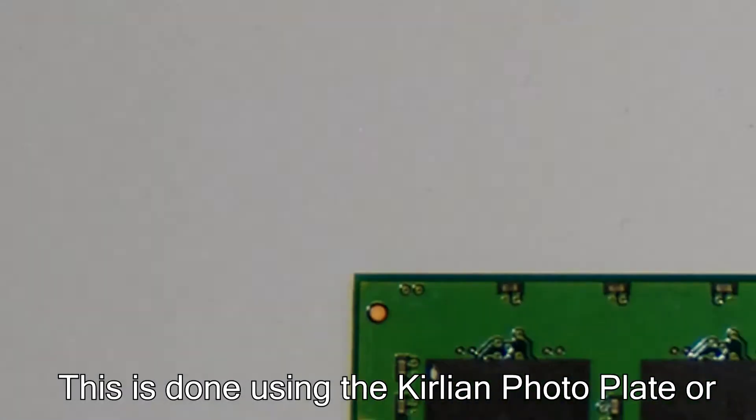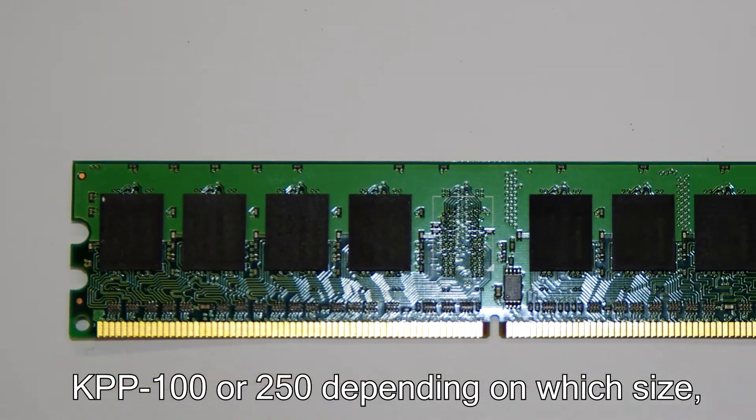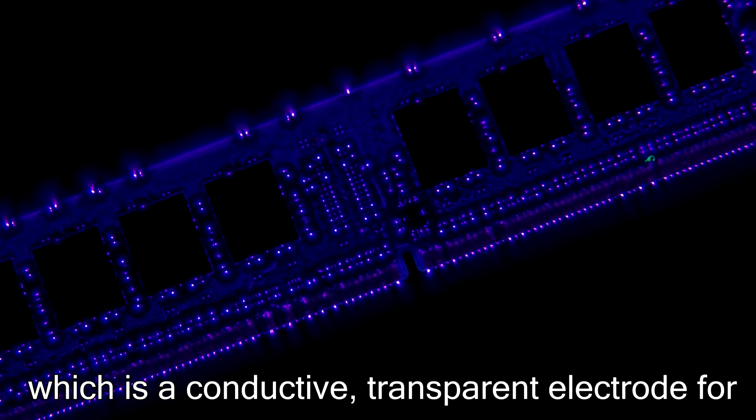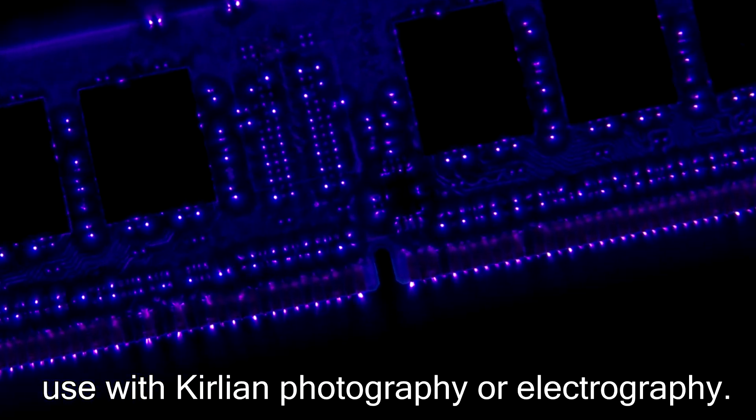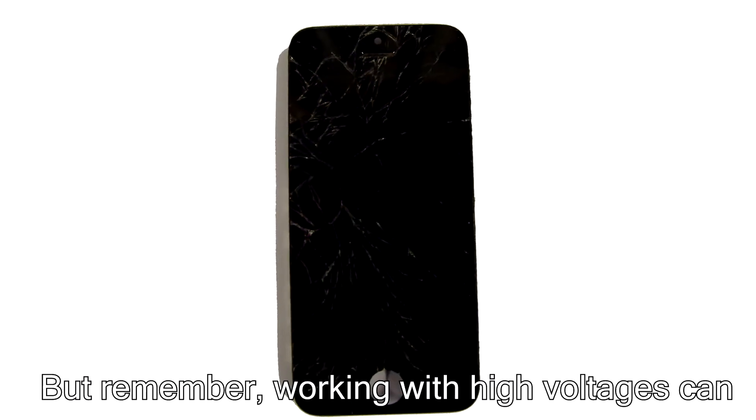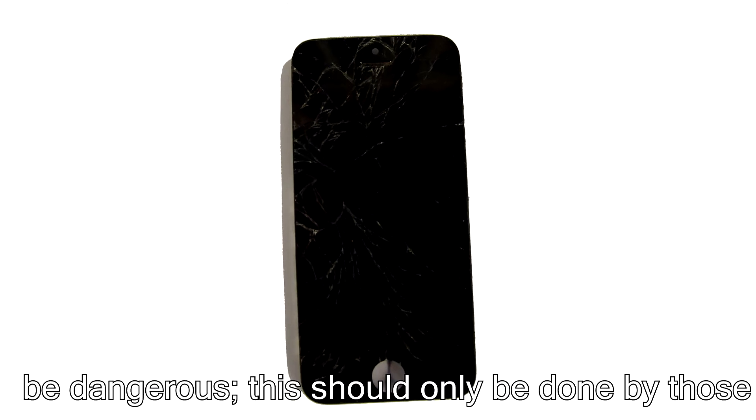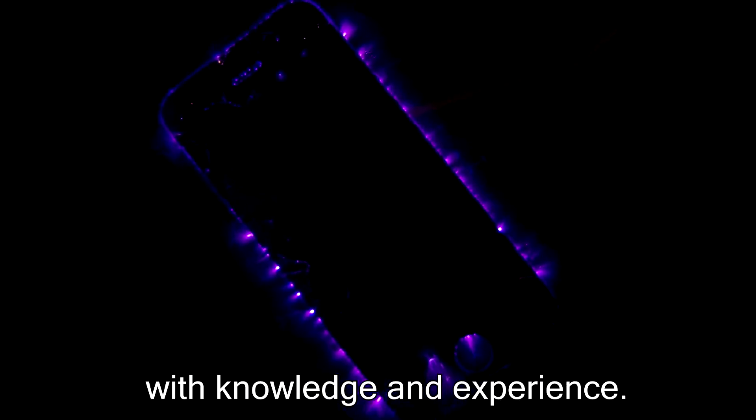This is done using a Kirlian Photo Plate, or KPP100 or 250 depending on which size, which is a conductive transparent electrode for use with Kirlian Photography or Electrography. But remember, working with high voltages can be dangerous. They should only be used by those with knowledge and experience.